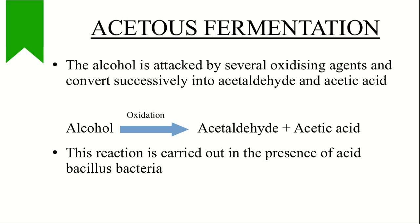Acetous fermentation is another type: alcohol generated in a preparation is attacked by oxidizing agents and converted successively into acetaldehyde and acetic acid. This reaction is carried out in the presence of acid bacillus bacteria and is an aerobic process. While alcoholic fermentation is anaerobic — where air is restricted — acid bacillus acts in the presence of oxygen.